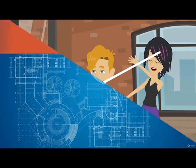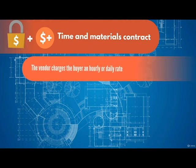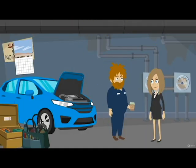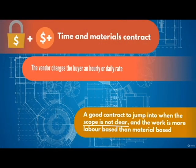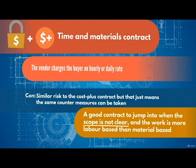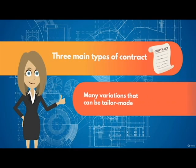The third type of contract is called time and materials, and it's a mixture of fixed price and cost plus. It's where the vendor charges the buyer an hourly or daily rate — for example, when consultants or technicians charge per day for their services. It's another good contract to use when the scope is not clear, and the work is more labour-based than material-based. It runs a similar risk to the cost plus contract, but that just means the same countermeasures can be taken. There can be many variations, and contracts can all be tailor-made. The project manager could add incentives for the vendor to complete work faster or to a better quality, and the contract can even include inflation if the project spans a long time.